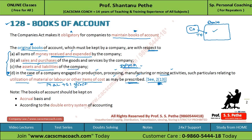One more important thing: the books of account should be kept on accrual basis. This means companies do not have the option to maintain books of account on cash basis. Books of account must be maintained on accrual basis — and that too according to the double entry system of accounting.